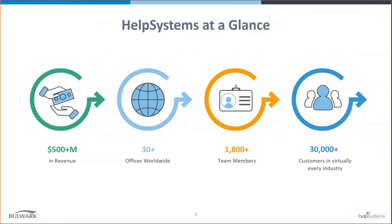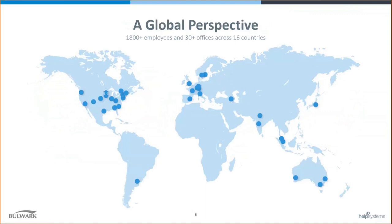Hello everyone, and thank you for taking the time today. Help Systems has been around for nearly 40 years and has over 30,000 customers worldwide with annual revenue surpassing 500 million USD. Our support is second to none with 30 plus offices globally. Many customers who have been with us for 20 plus years might still think of us as an IBMi business, but we are certainly much more. Our headquarters is just outside Minneapolis in the US, and in the APAC region we have offices in Sydney, Melbourne, Perth, Singapore, and Malaysia.